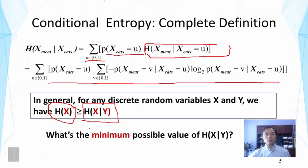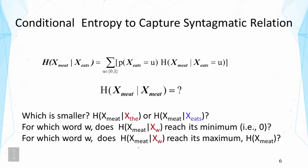It's also interesting to think about the minimum possible value of this conditional entropy. We know the maximum value is the entropy of x. The minimum possible value would be 0. It's worth thinking about under what situation we achieve this. So let's see how we can use conditional entropy to capture syntagmatic relations.